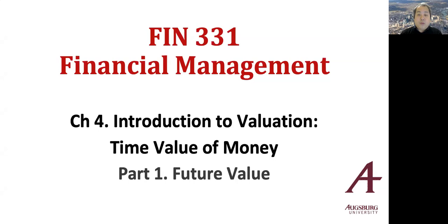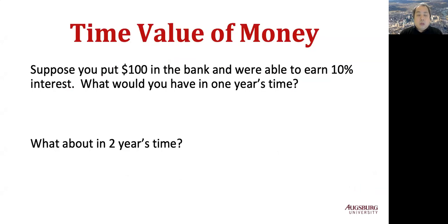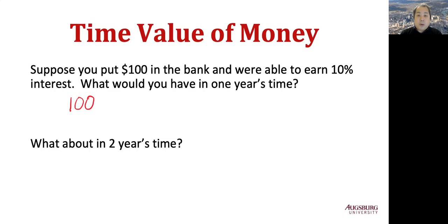First part, we will see future value. Let's look at time value of money. Suppose you put $100 in the bank and were able to earn 10% interest. What would you have in one year's time? You have $100 today, you go to the bank, and it gives you 10% interest for one year. So you will have 10% interest, which is $10, so you have $110.